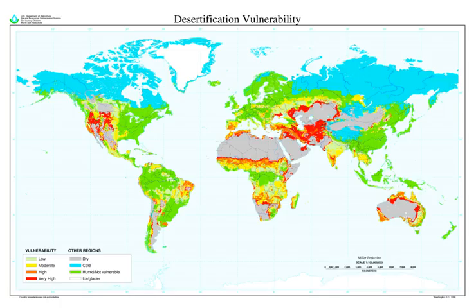Desertification is a type of land degradation in which a relatively dry area of land becomes increasingly arid, typically losing its bodies of water as well as vegetation and wildlife. It is caused by a variety of factors, such as through climate change, particularly the current global warming, and through the overexploitation of soil through human activity.